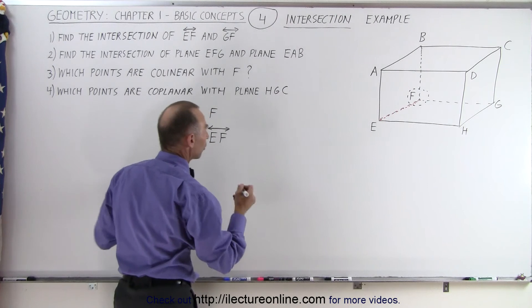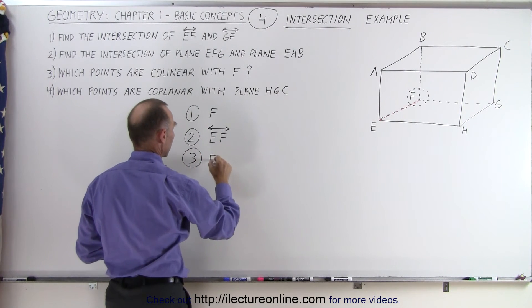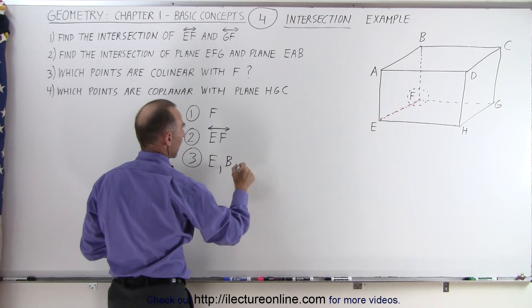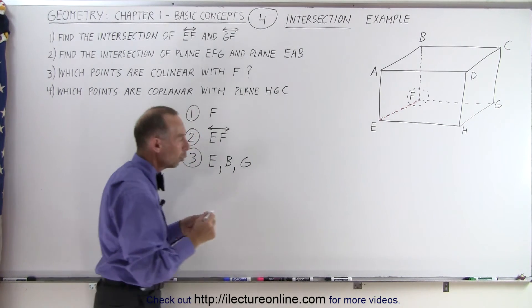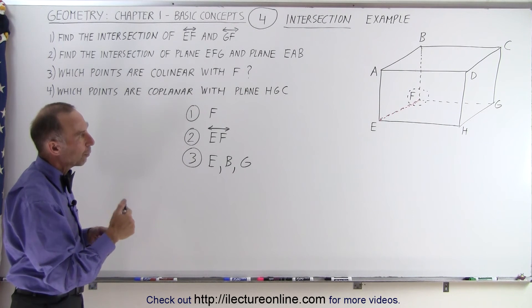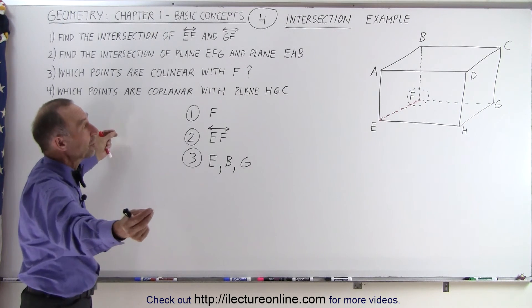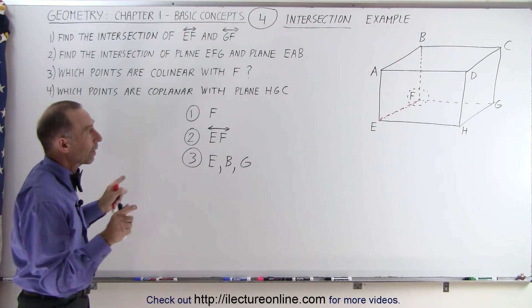So which points are collinear with F? Well, we can say that E, B, and G are all collinear. We have three segments, one from E to F, one from F to B, and one from F to G. And then we can assume those to be lines when we imagine they go out to infinity in both directions. And so those are the three points that are collinear on those three lines with F.